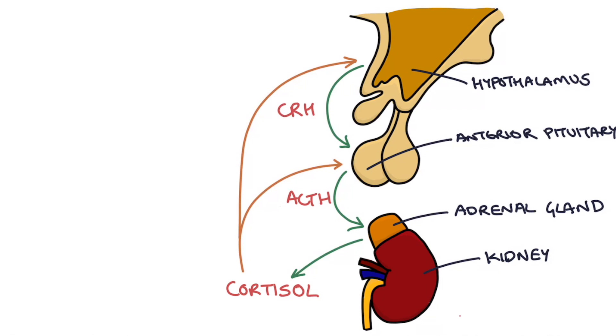We can also measure ACTH to investigate adrenal insufficiency, and this is how you would interpret the results. In primary adrenal insufficiency, the adrenal gland is not producing cortisol, so you end up with a low cortisol level.